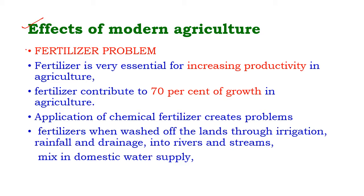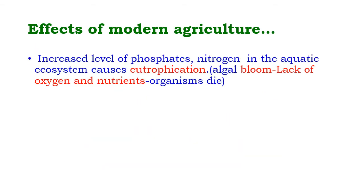Effects of modern agriculture — fertilizer problems: fertilizer is essential for increasing agricultural productivity, contributing to 70% of growth in the agricultural field. Chemical fertilizers create environmental problems when washed off land through irrigation, rainfall, and drainage into rivers and streams, mixing into domestic water supply. The increased level of phosphorus and nitrogen in aquatic ecosystems causes eutrophication — a condition of excessive growth of algae, plants, and animals — causing lack of oxygen and nutrition in the ecosystem.